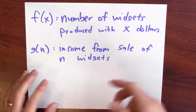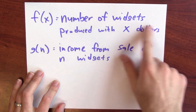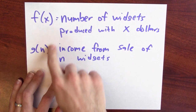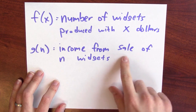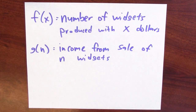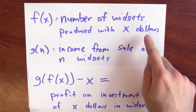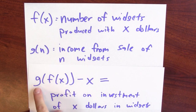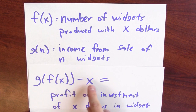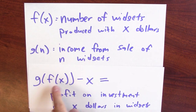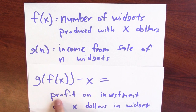Here's a concrete example. Suppose f of x is the number of widgets produced with an investment of x dollars. With more money, maybe you can build more widgets. Suppose g of n is the income that you get by selling those n widgets. What you'd really like to know is, for a given investment, how much money are you going to make? Well, that's g of f of x minus your initial investment. G of f of x is how much money comes in when you sell the widgets produced with your initial investment of x dollars. This quantity measures the profit on an investment of x dollars in widget production.